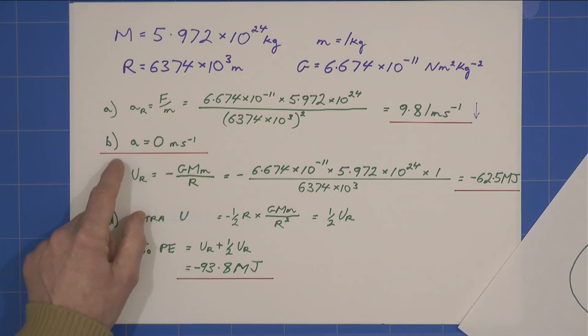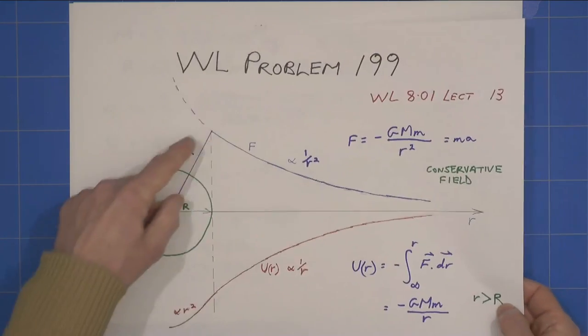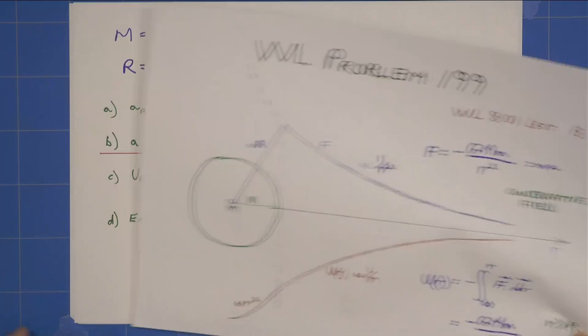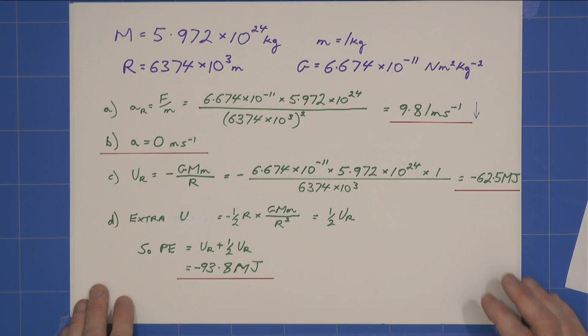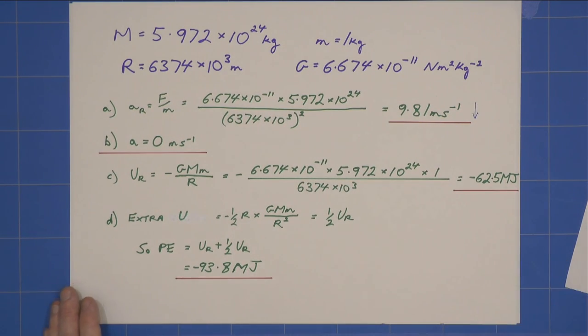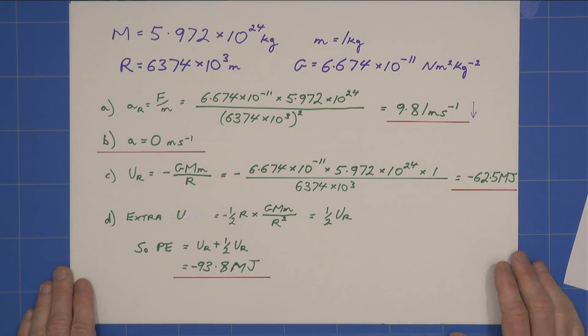Part B, A is zero, acceleration at the centre of the earth is zero, for the reasons that I've discussed. The force drops to zero, because all the mass is around you, and there's nothing left to act on you inside when you're at the centre.